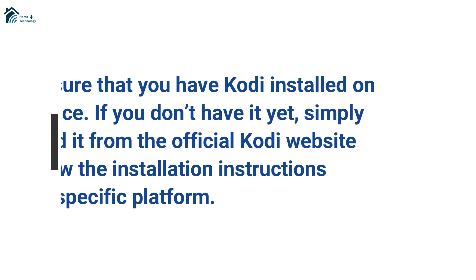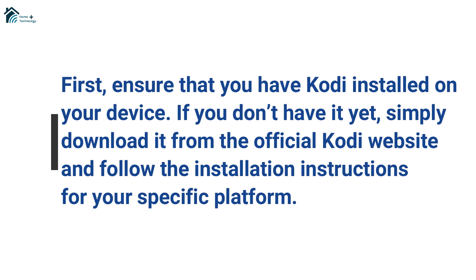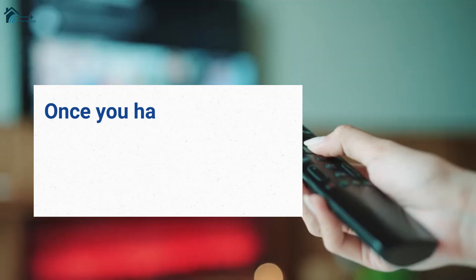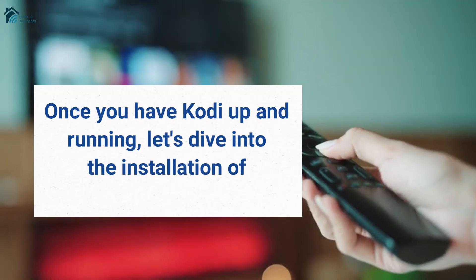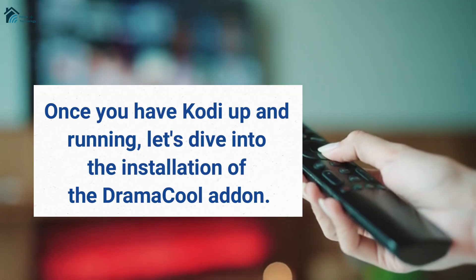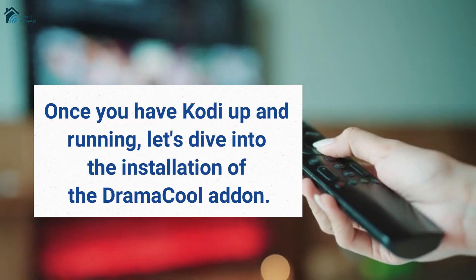First, ensure that you have Kodi installed on your device. If you don't have it yet, simply download it from the official Kodi website and follow the installation instructions for your specific platform. Once you have Kodi up and running, let's dive into the installation of the Dramacool addon.